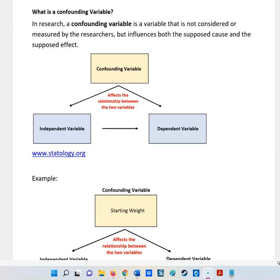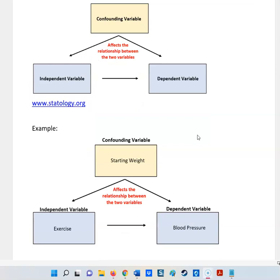So if you think about a confounding variable being up here, it affects the relationship between the two things that you're studying, which is your independent variable and your dependent variable. So I'm going to show you three examples.